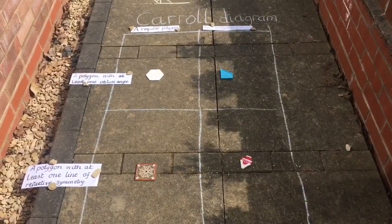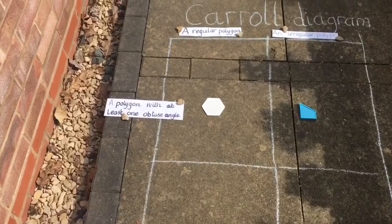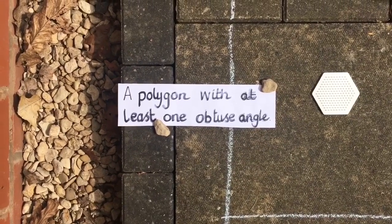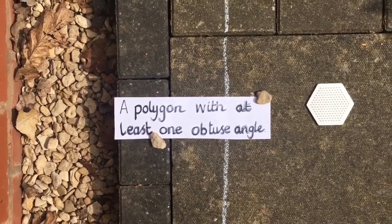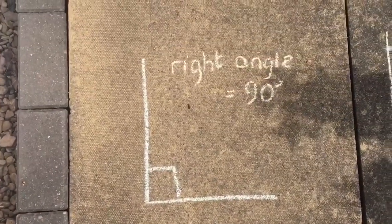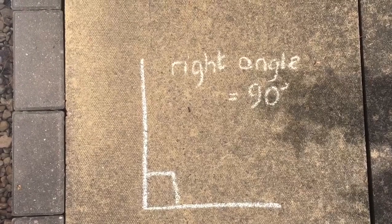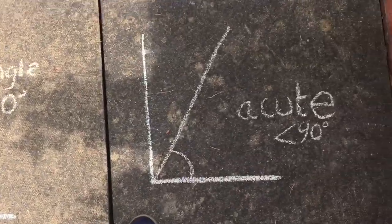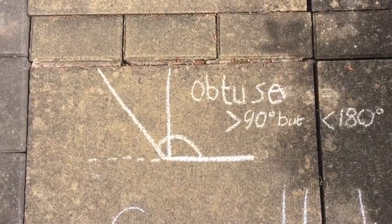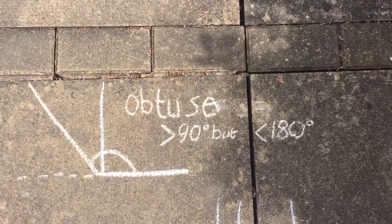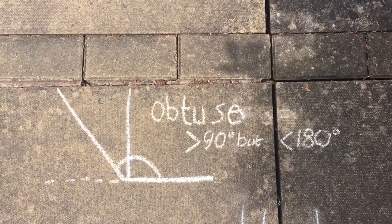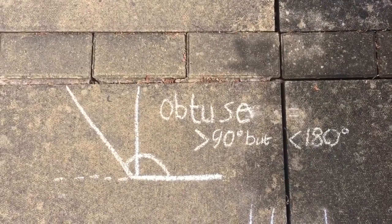I've now changed the category on one part of my Carroll diagram to include angles. The new label is a polygon with at least one obtuse angle. Let's do a little revision on angles: a right angle is 90 degrees — that's the same as a corner. An acute angle is less than 90 degrees. An obtuse angle is greater than 90 degrees but less than 180 degrees. If you really want to challenge yourself, you could try and find some shapes with reflex angles, which is greater than 180 degrees but less than 360 degrees.